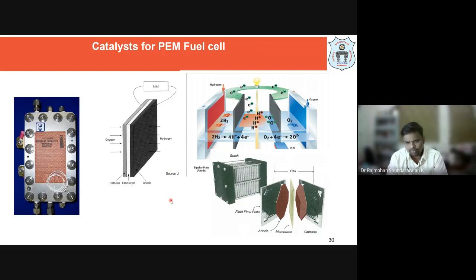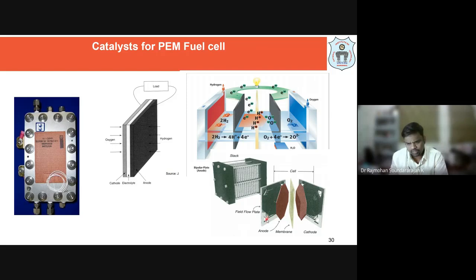A fuel cell stack is n number of fuel cells kept in series in a single arrangement. Each fuel cell has bipolar plates — also called flow field plates — through which hydrogen, oxygen, and byproducts flow to reach the cathode or anode surfaces.